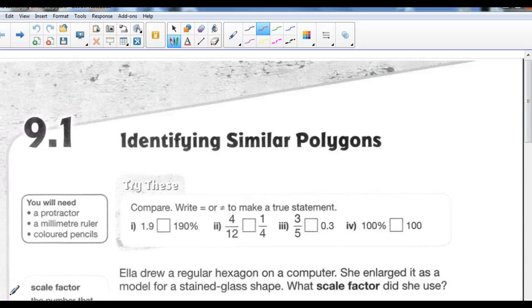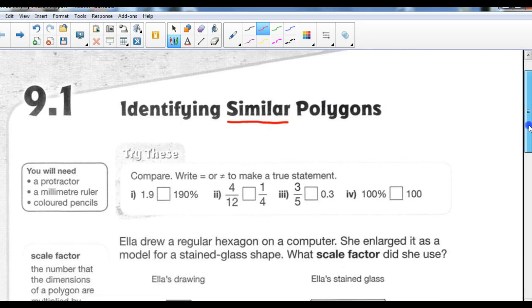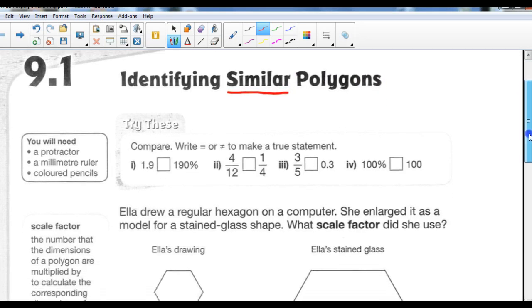Okay, this is 9.1, identifying similar polygons, the keyword here being similar. They have to be the same shape, they have to have the same angles. They don't necessarily have to be the same size, they just have to have the same ratio. So you're going to need a protractor, a ruler, maybe some colored pencils to do some of this. So try these.